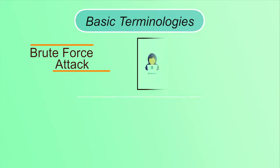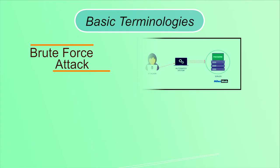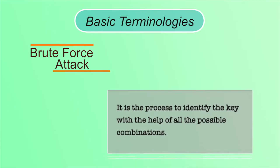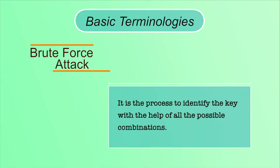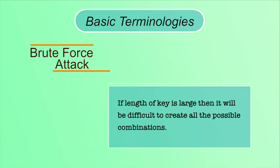In a brute force attack, the attacker tries every possible key on a piece of ciphertext until plaintext is obtained. For example, if we know the key is of length 4 and made up of 0 and 1 bits, then the possible number of keys will be 2^4 = 16 — combinations like 0000, 0001, 0010, and so on. If the length of the key is large, it will be difficult to create all possible combinations. Cryptanalysis is the process of converting ciphertext to plaintext without knowledge of the key, also known as code breaking.